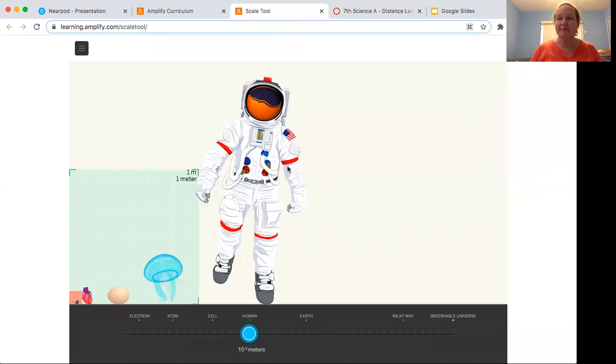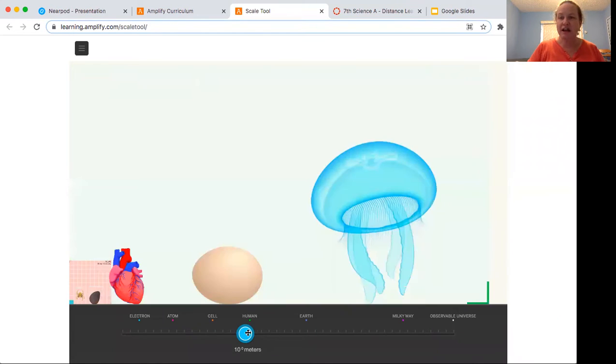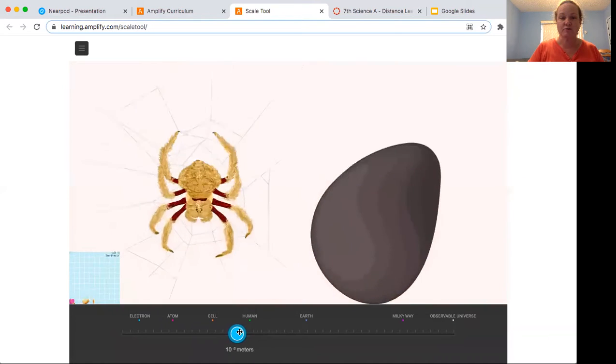Alrighty. So I'm sure that when you looked on the scale tool, you had to go way over towards the left to go tiny, right? To find the molecule, super tiny.